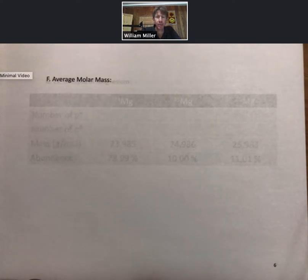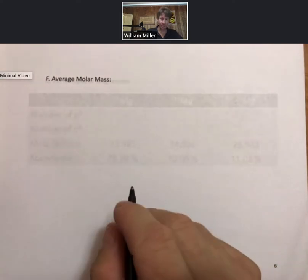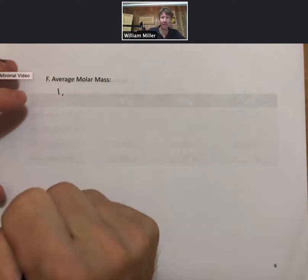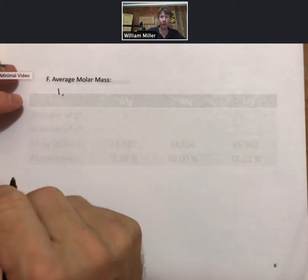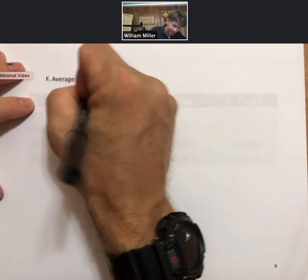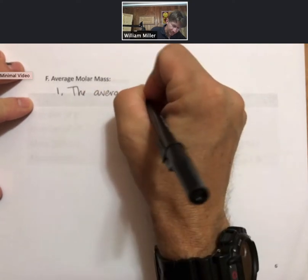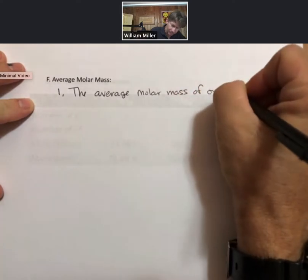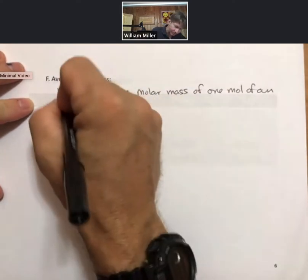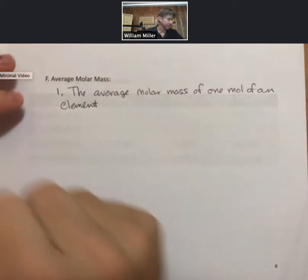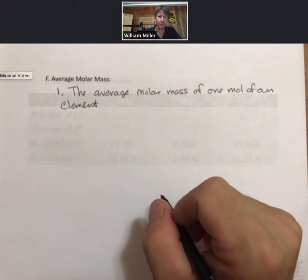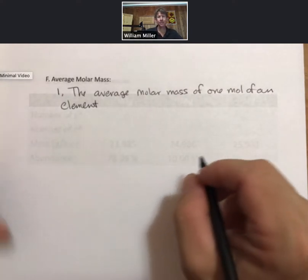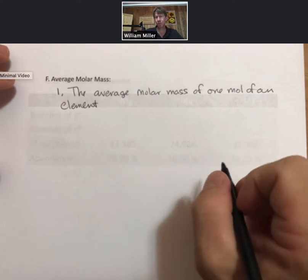Let's pick up with the definition and properties of the average molar mass for each element. The average molar mass of one mole of an element, and that's where we'll start by writing, the average molar mass of one mole of an element. Is averaged over all naturally occurring isotopes.